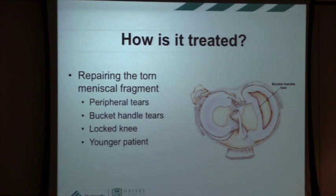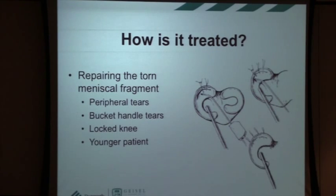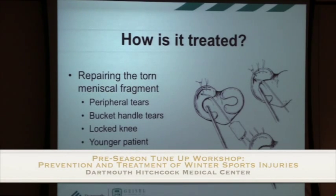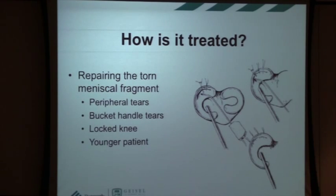Sometimes the tear is repaired instead. This is called a bucket handle tear — in three dimensions it can flop in and out of the joint, potentially causing the knee to get stuck. Especially if these are acute tears in the red zone where they can heal, they're often treated with repair using sutures or suture anchors across the tear. The difference in recovery: if your torn piece is cut out, people are often back to near-normal within two weeks. If you need a repair, it's a much longer recovery involving non-weight-bearing, a continuous motion machine, and more restrictions — and sometimes the repair just doesn't heal.